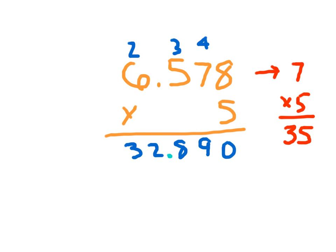I've shown you the steps if we had worked with a thousandths number: 6 and 578 thousandths times 5. That same approach where we would have found our estimate first of 35. Since we had 35, that's how we could place our decimal point. You'll notice with 6 and 578 thousandths there were three decimal places after the decimal point: the tenths place, the hundredths place, and the thousandths place. And since there were three decimal places within this product, that's why we have three decimal places within our answer.